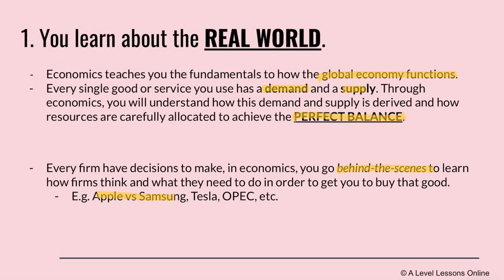There are many considerations that go into play — things like advertising and bulk buying. For instance, did you know that Apple's LED screens are actually produced by Samsung, and Samsung sells them to Apple, who then sells them at a premium price using their own iOS software? Your Nike shoes are not actually made in the US — they could be made in sweatshops, raising issues of inequity. Economics raises questions about scarcity, how firms make decisions, and how society functions.